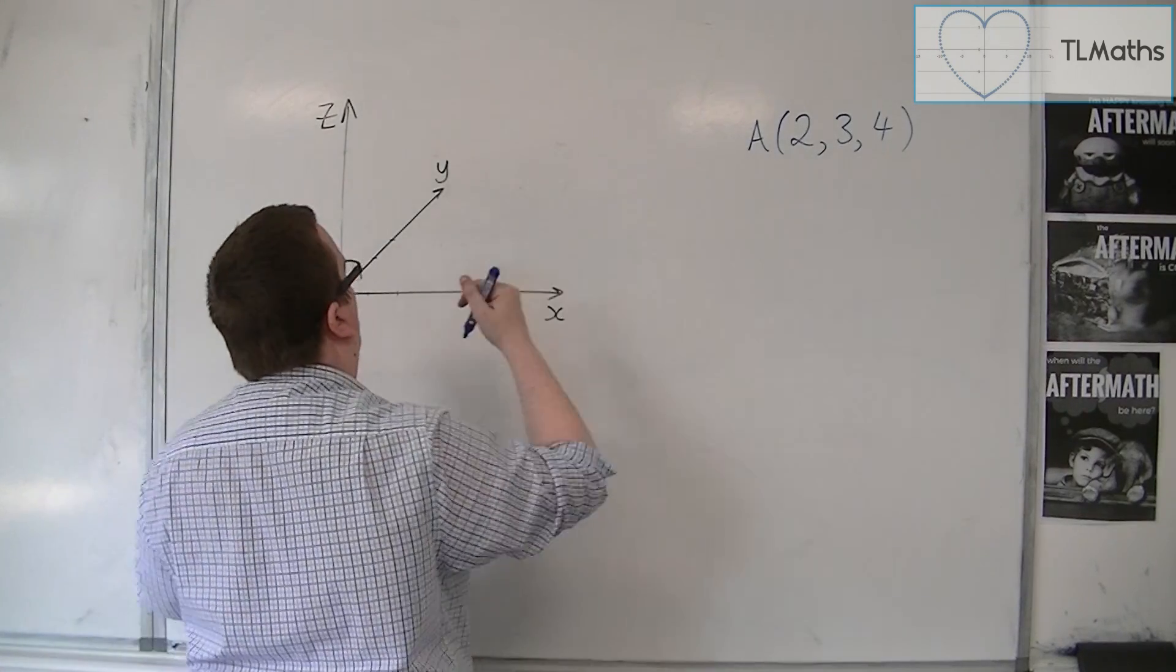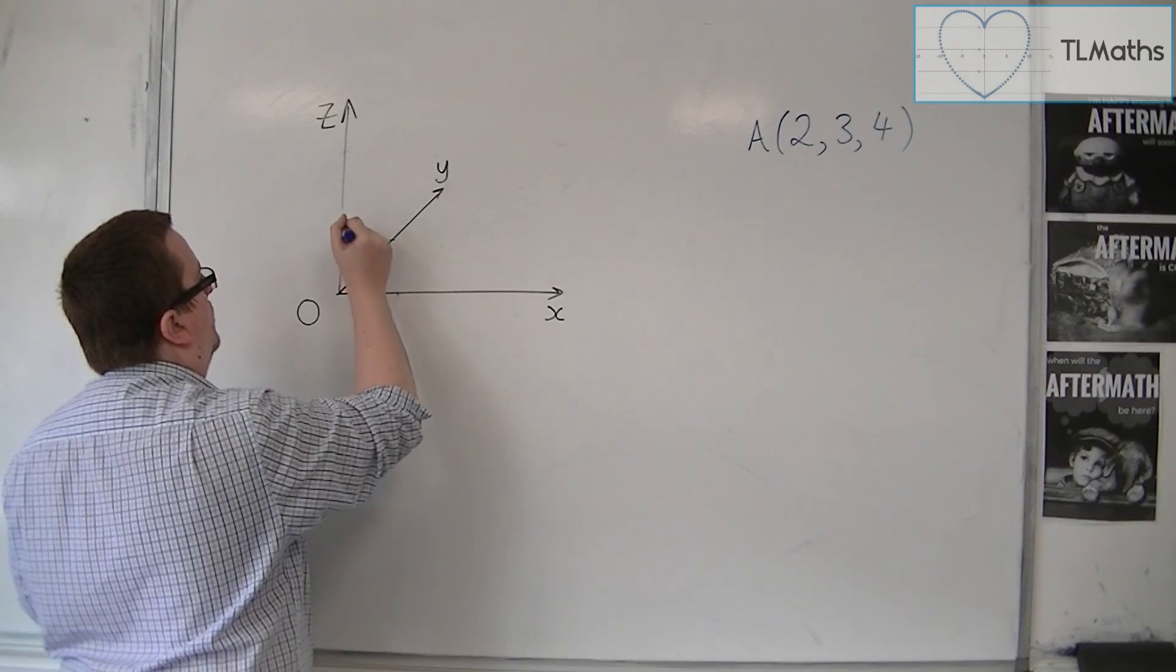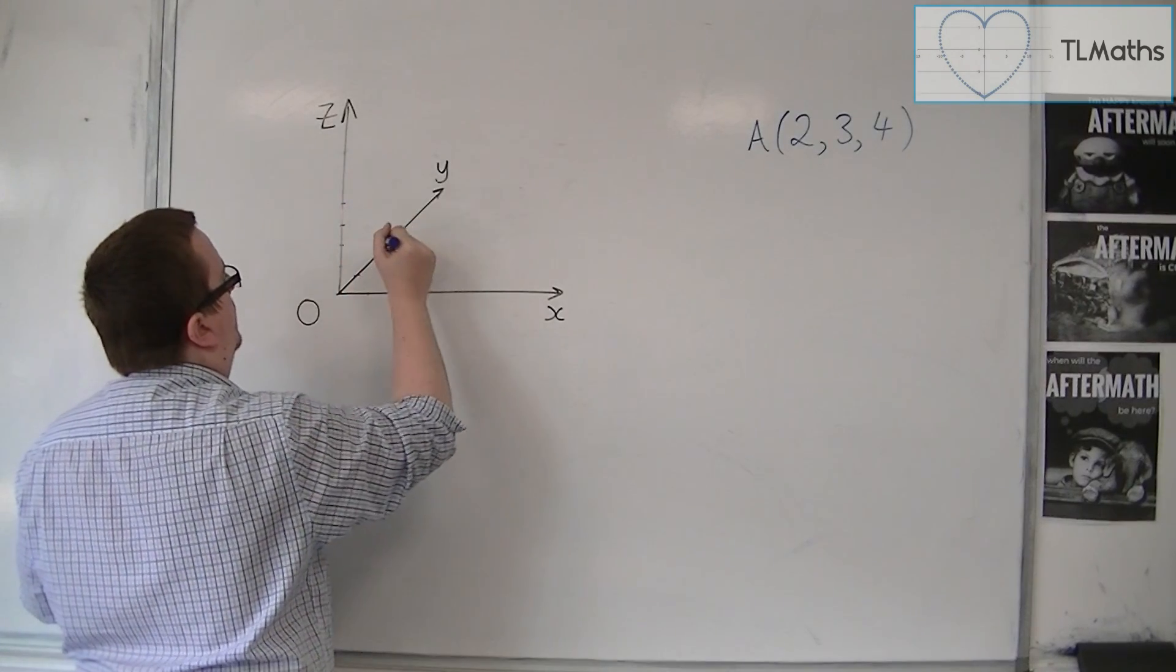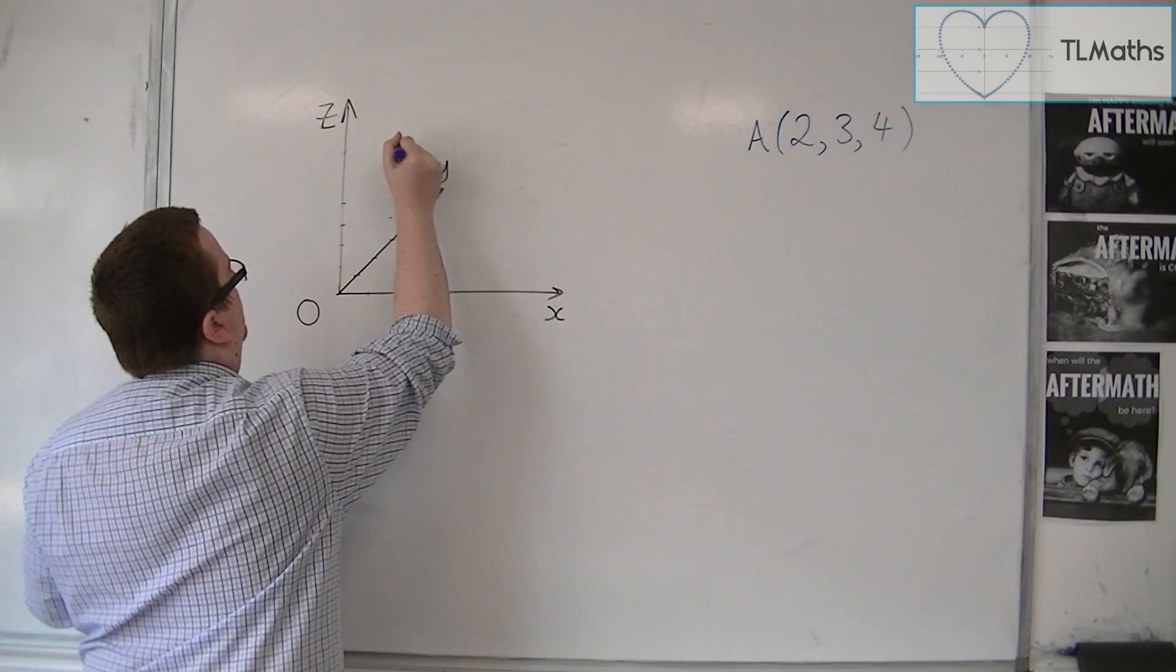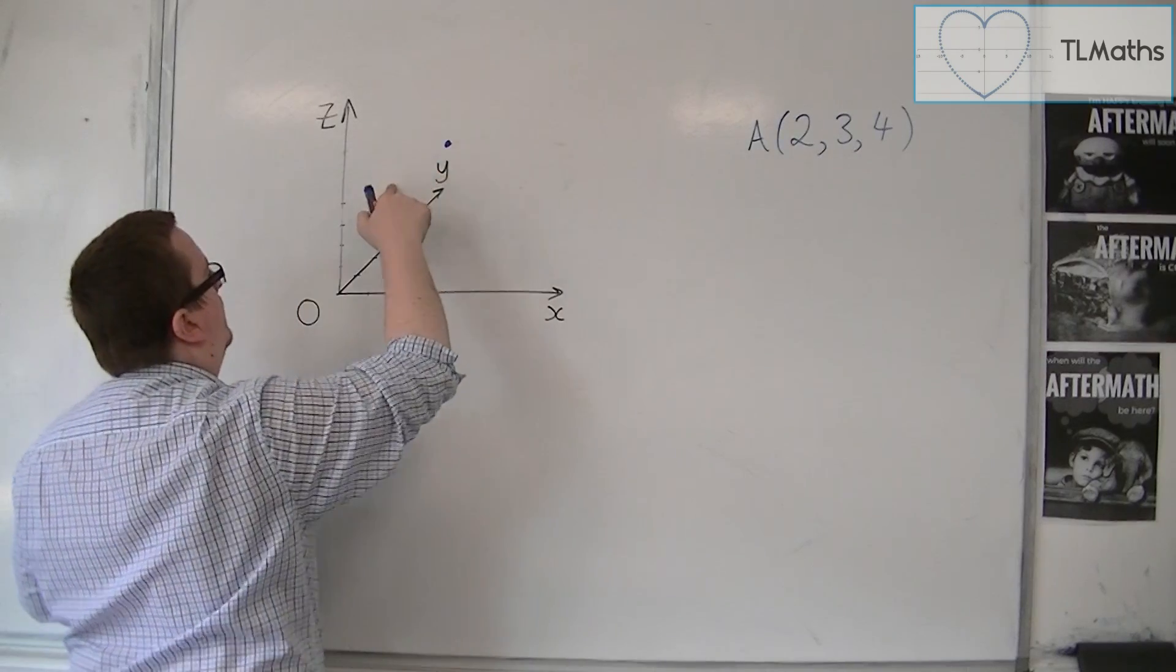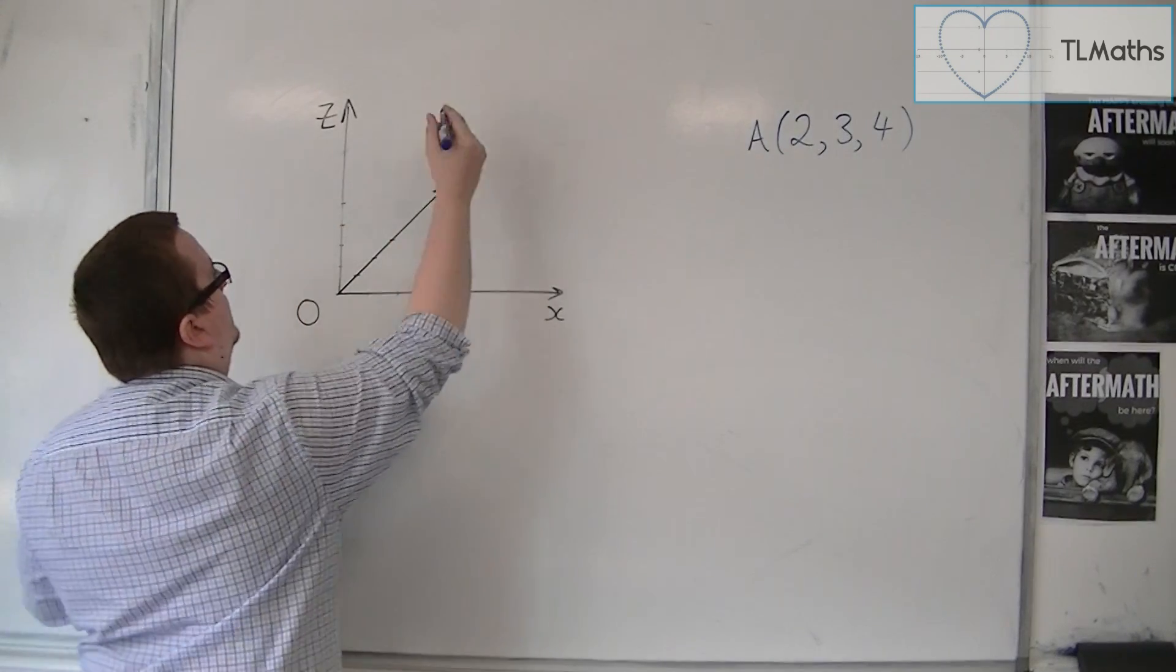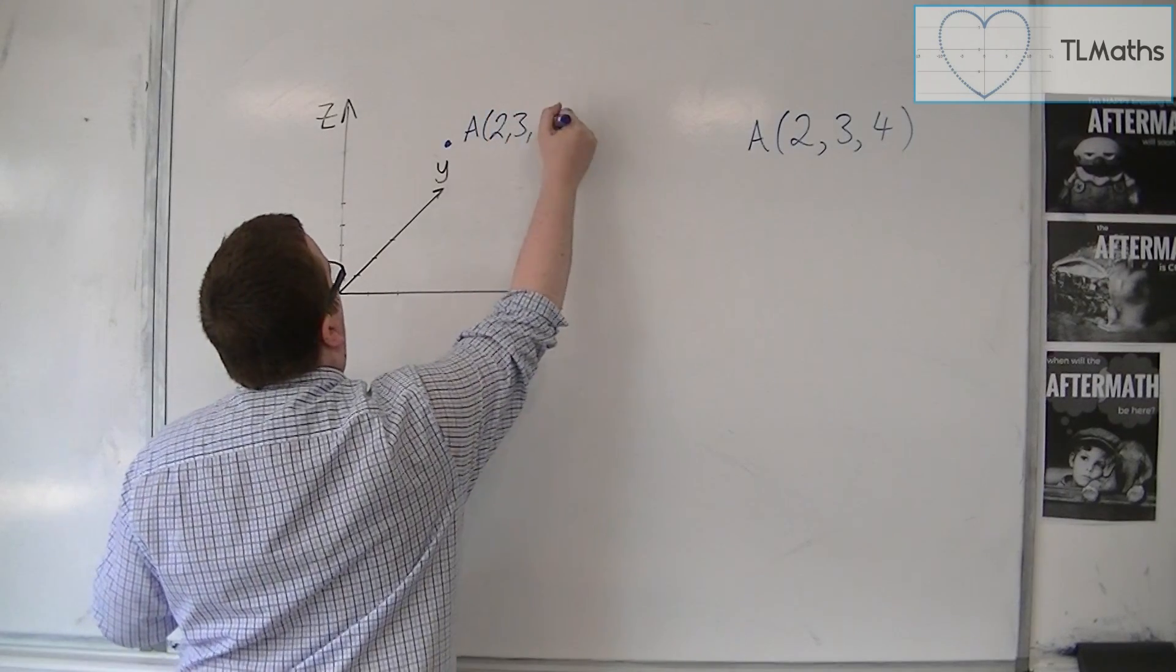And then 4 in the z direction, so we'd have 1, 2, 3, 4. So here we'd have 1, 2, 3, 4. So it would be up here. So that might be my point. That could be point A: 2, 3, 4.